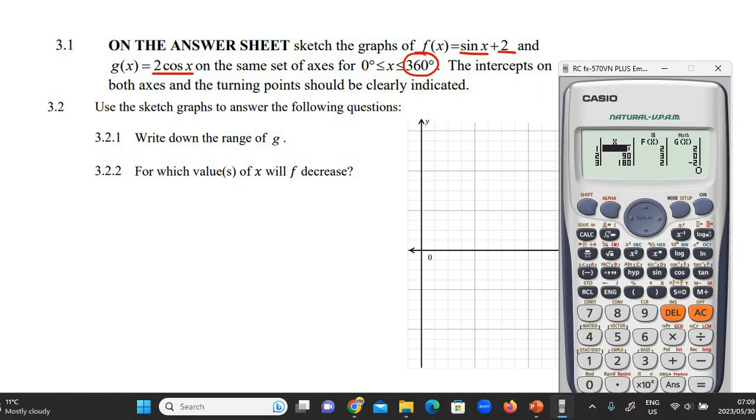You see, so they give you all of the x values: 0, 90, 180, 270, 360. You see how they're going up by 90. That's your step. And then they give you the y values. So that's the y value for the graph of f, and that's the y value for the graph of g. So let's go, I'm going to quickly go write all these values down.